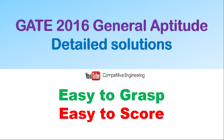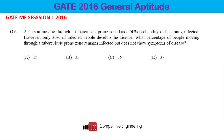This is a GATE 2016 general aptitude detailed solution from GATE mechanical engineering session 1. The question is: a person moving through a tuberculosis-prone zone has a 50% probability of becoming infected. However, only 30% of infected people develop the disease. What percentage of people moving through a tuberculosis-prone zone remains infected but does not show symptoms? The options are A) 15, B) 33, C) 35, and D) 37.